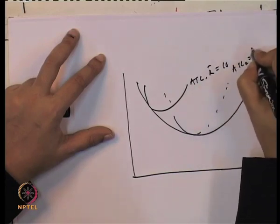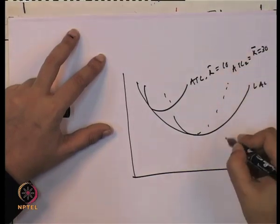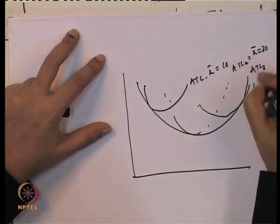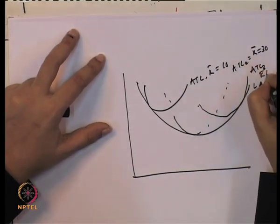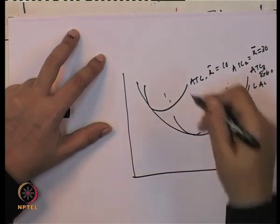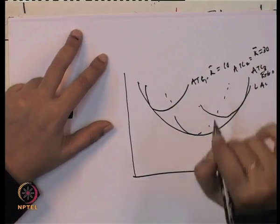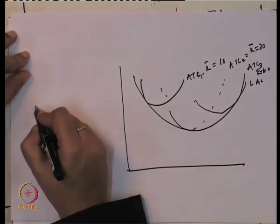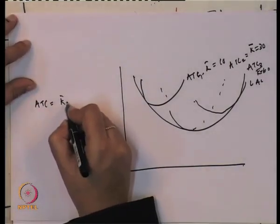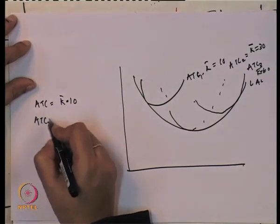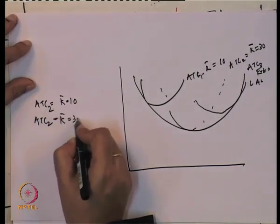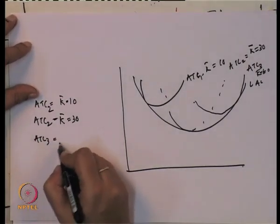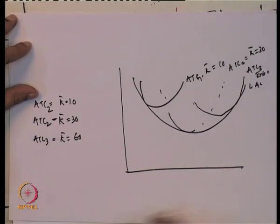Here we have ATC2 where capital K is fixed at 30, ATC1 where capital is fixed at 10, and ATC3 where K equals 60. These are three different short-run cost curves. In ATC1, the short-run capital is fixed at 10, and in ATC3 the capital is fixed at 60.